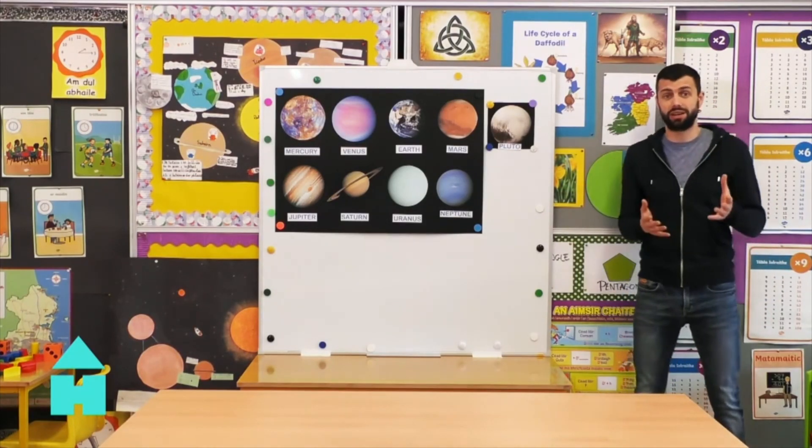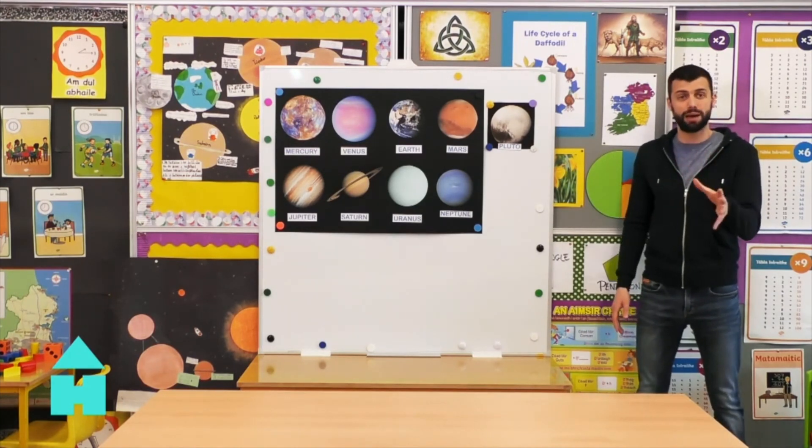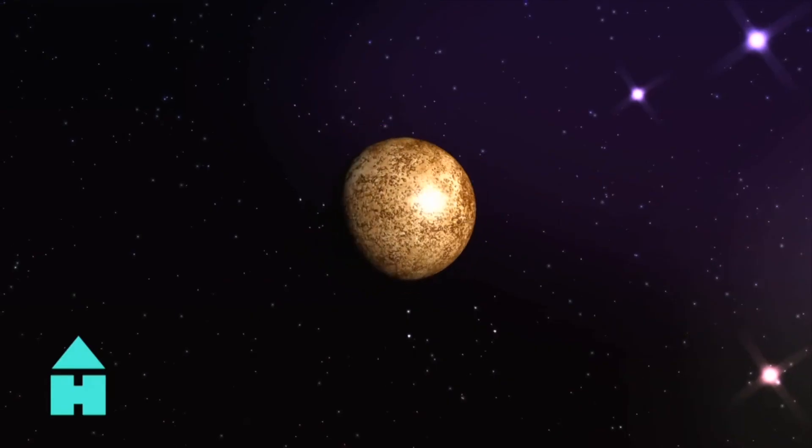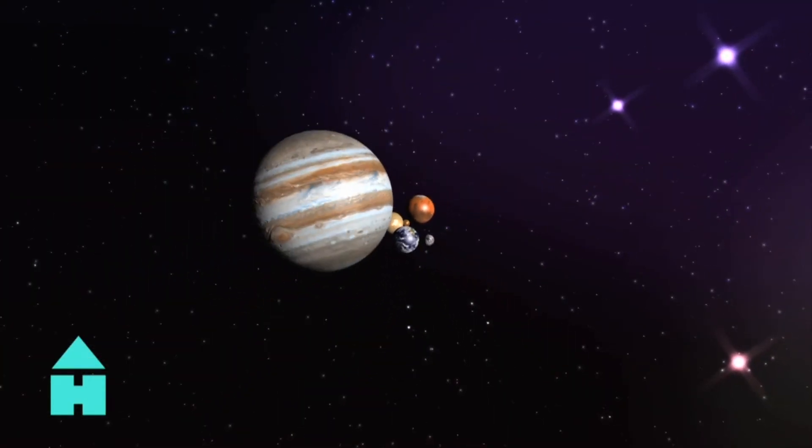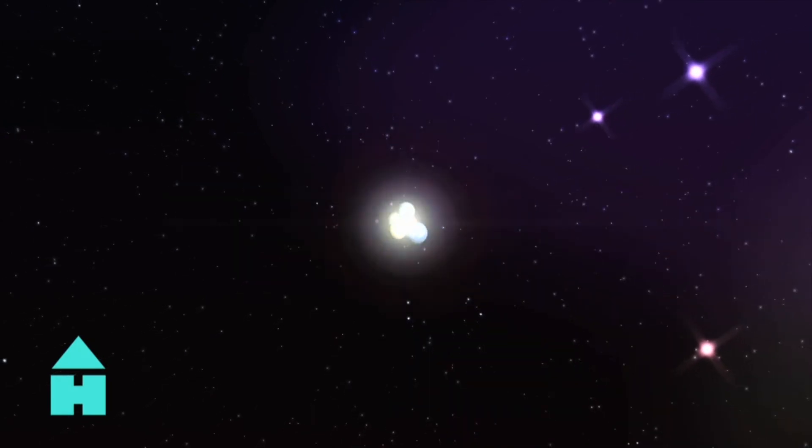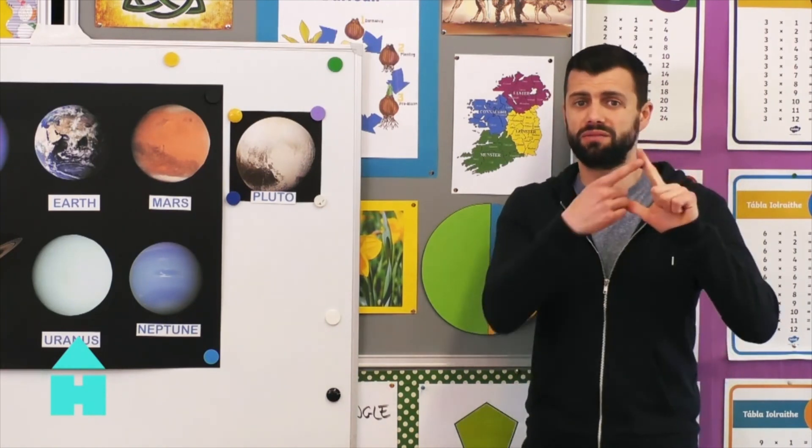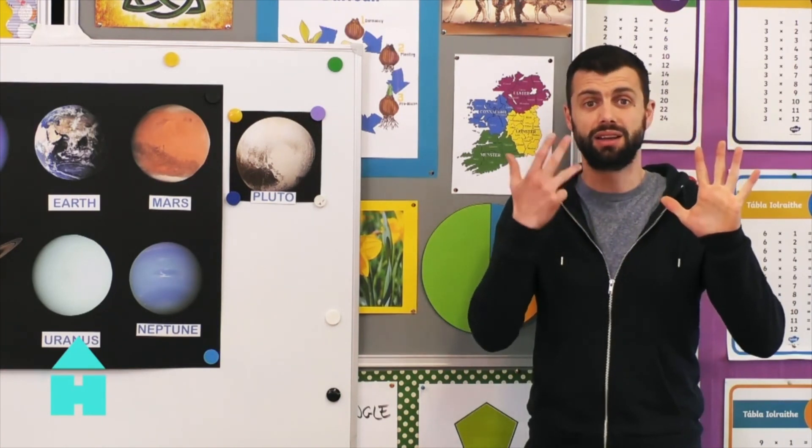Now, I hope you enjoyed learning about all the planets in our solar system. And here's a really nice way of remembering each one. Mercury, Venus, Earth, Mars, Jupiter, Saturn, Uranus, Neptune, Pluto, even though I know it's not really a planet. You can remember it like this: My very educated mother just showed us nine planets.